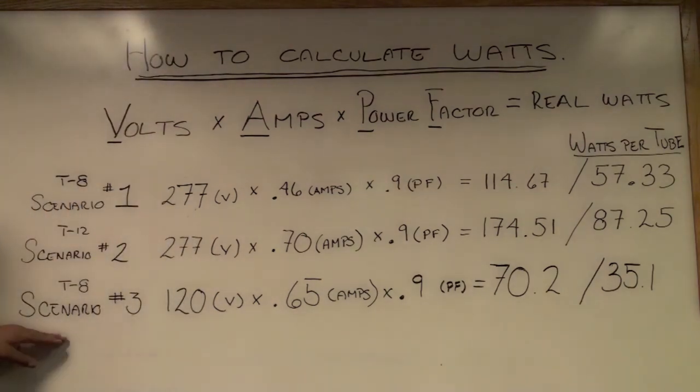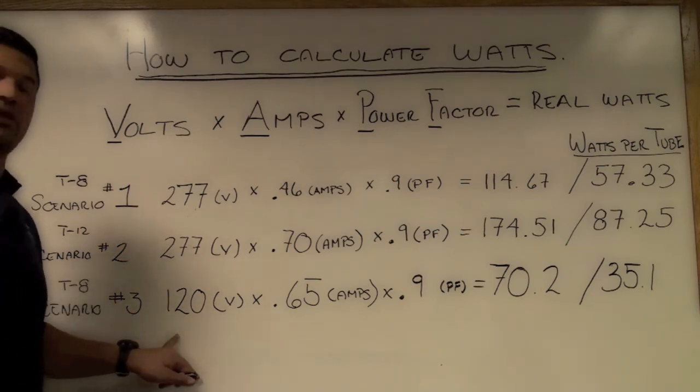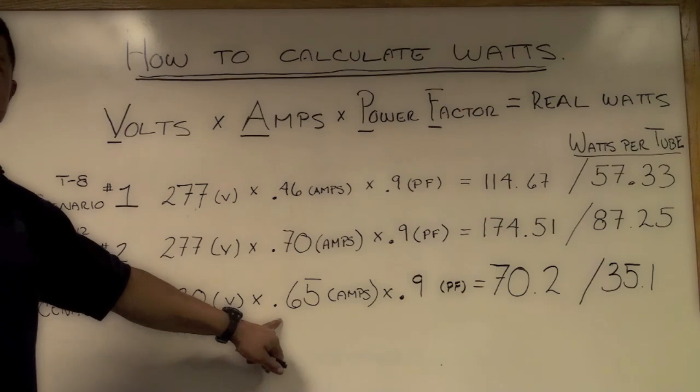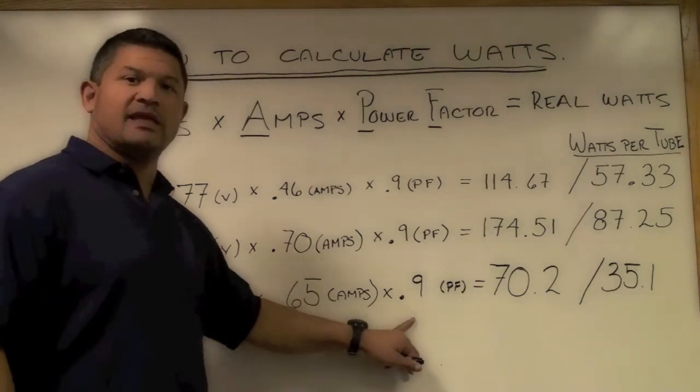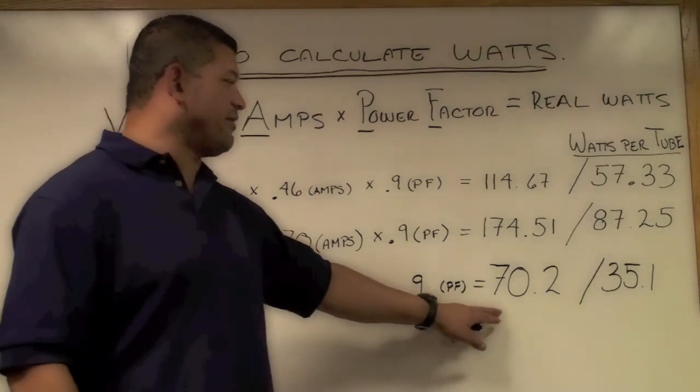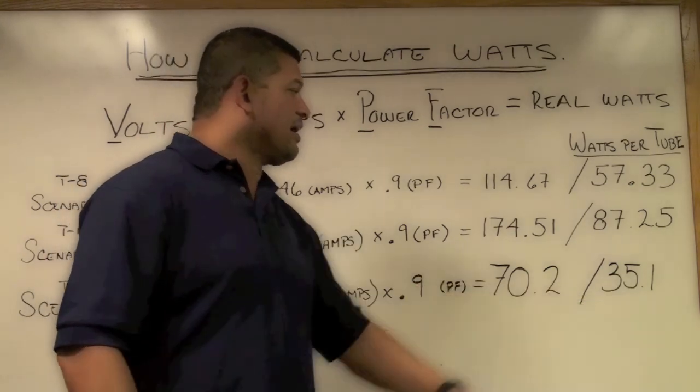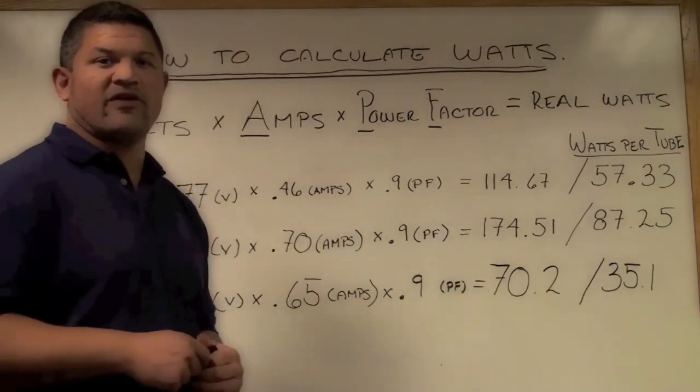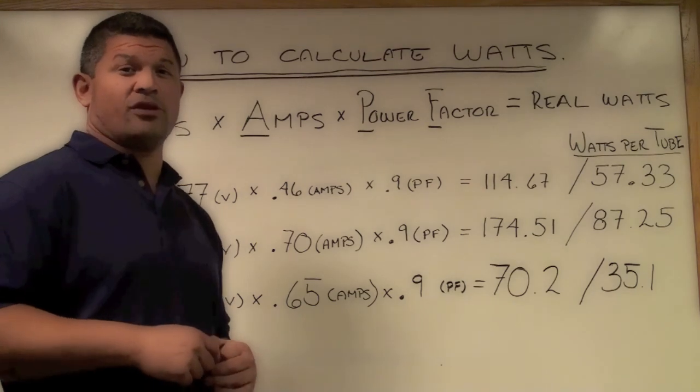In addition, scenario number three we have a T8 unit with 120 volts per unit, 0.65 on the amperage, 0.9 once again as a standard default brings it to 70.2 and dividing it by the two tubes that you have is 35.1 watts per unit.